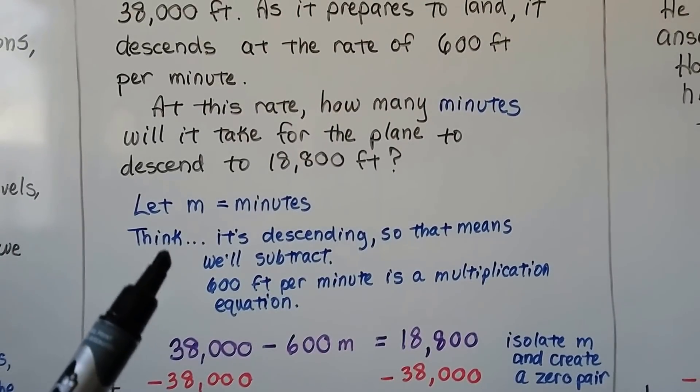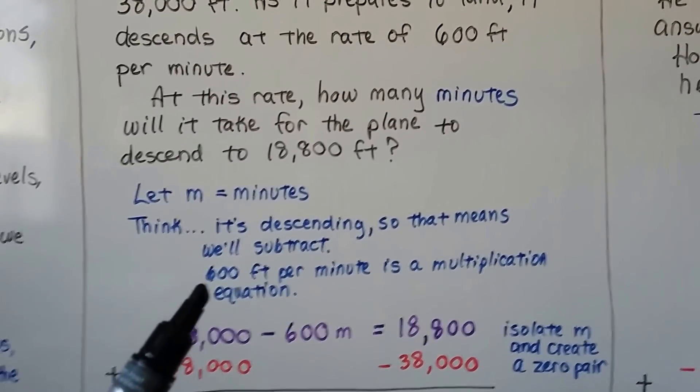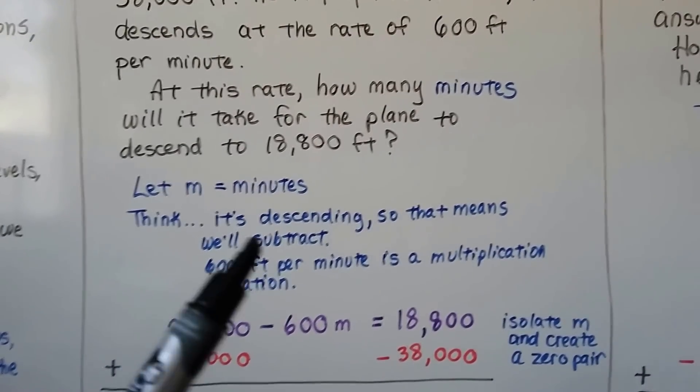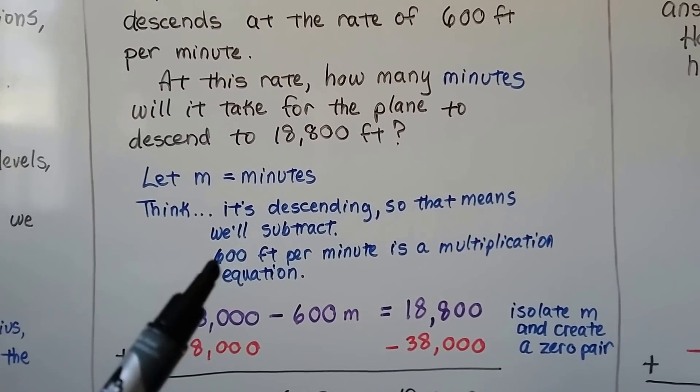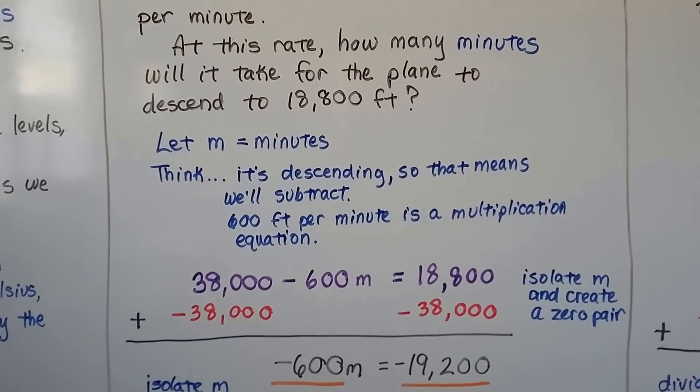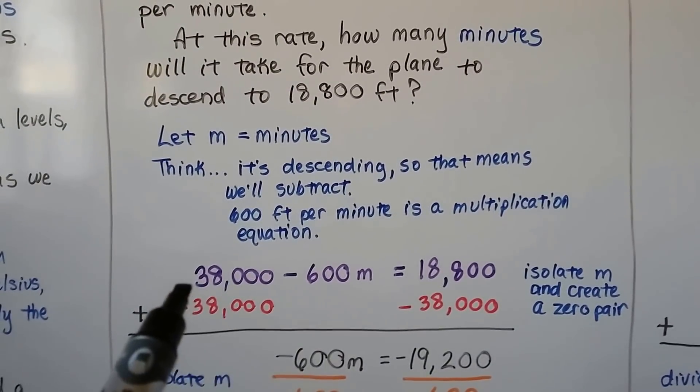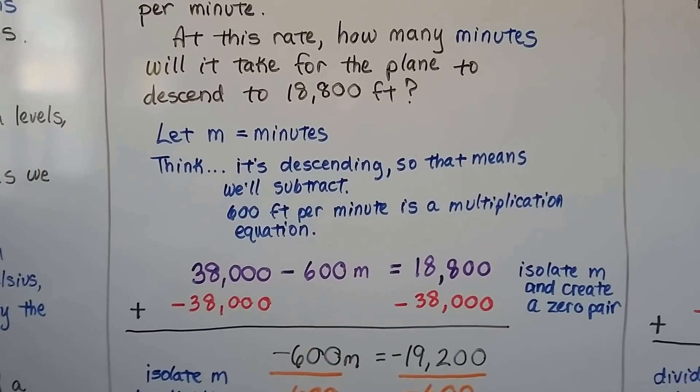It's descending, so that means we're going to subtract 600 feet per minute is a multiplication equation. Depending on the minutes, it's 600 for each one, so if it was 2 minutes, it would be 1,200. The equation we have is 38,000 minus 600m equals 18,800.